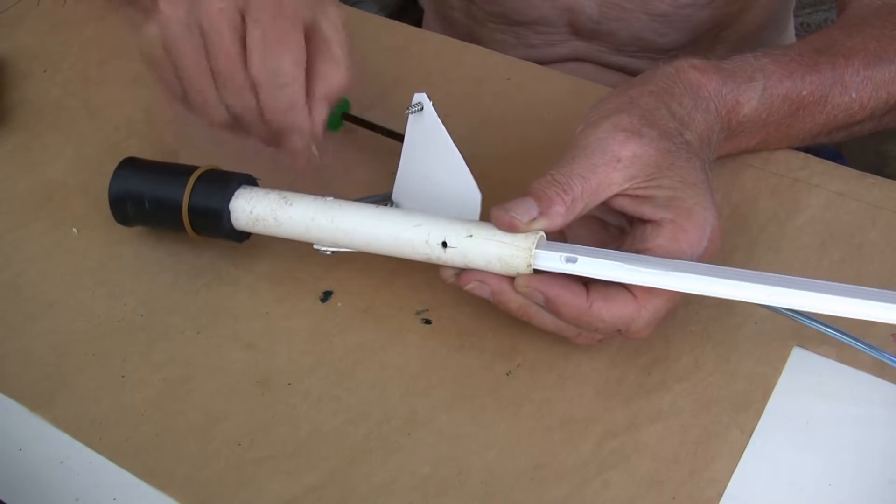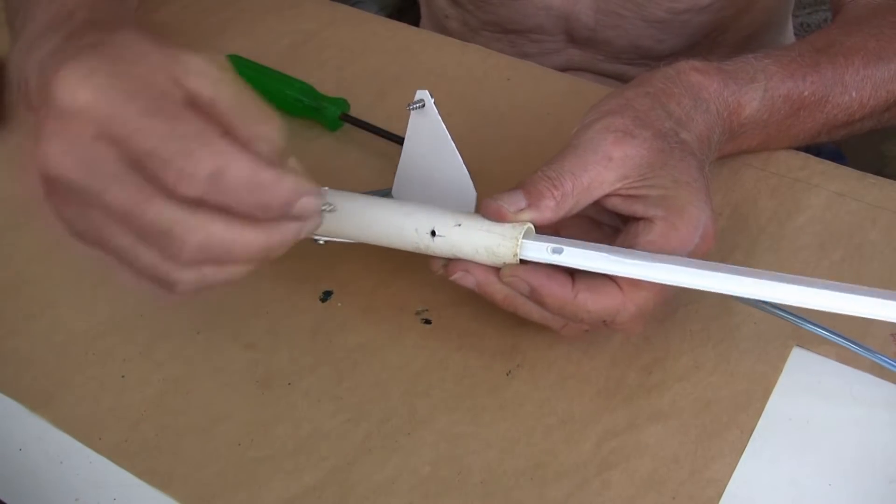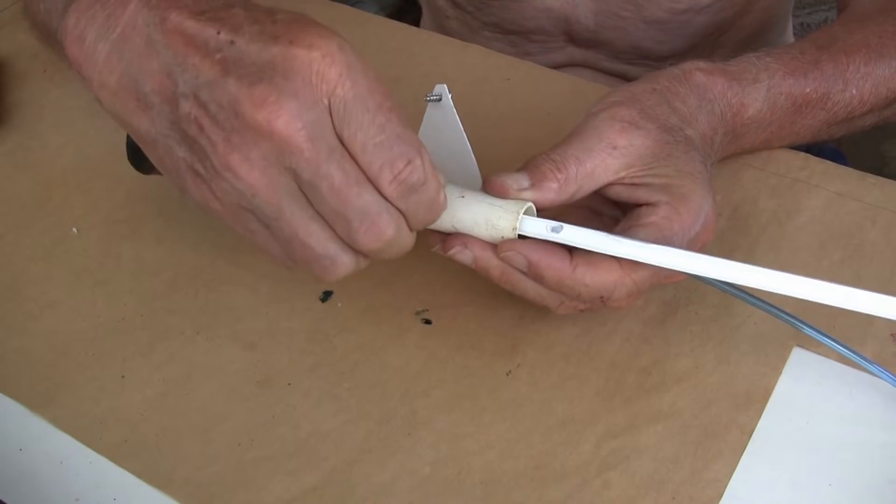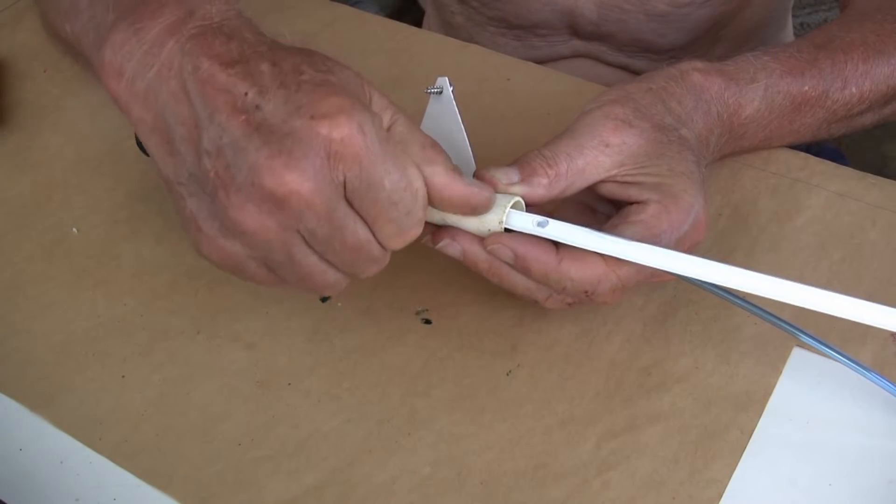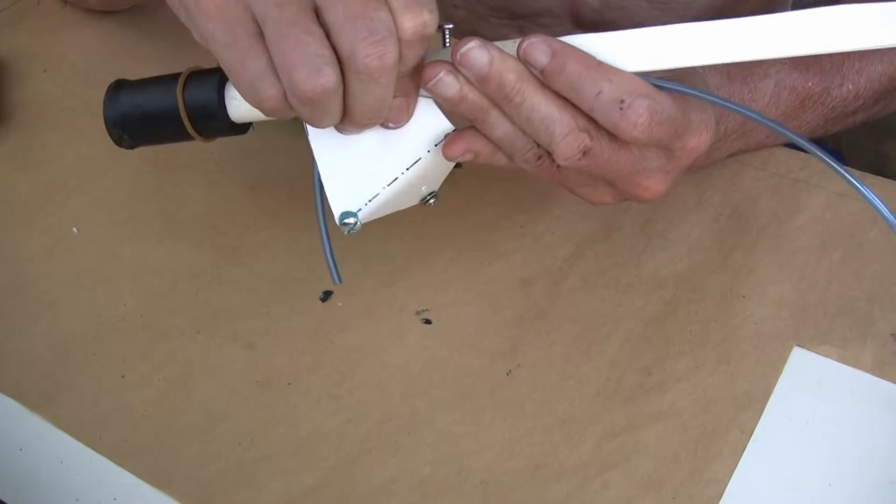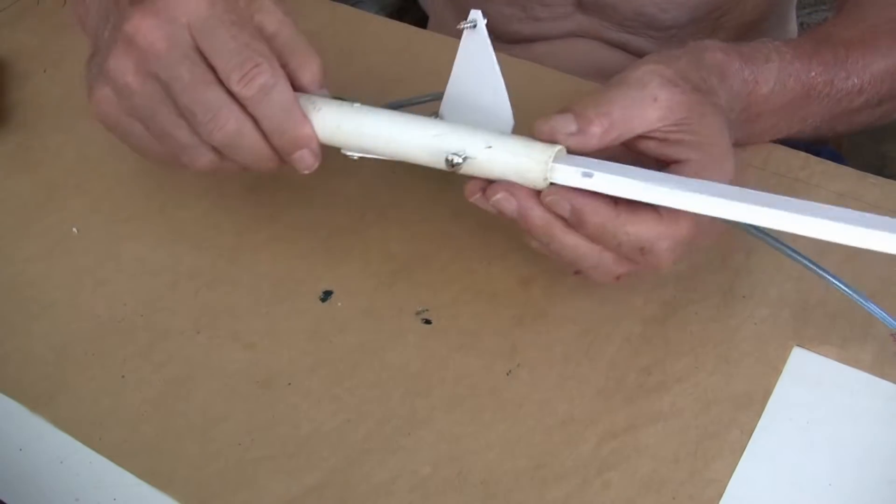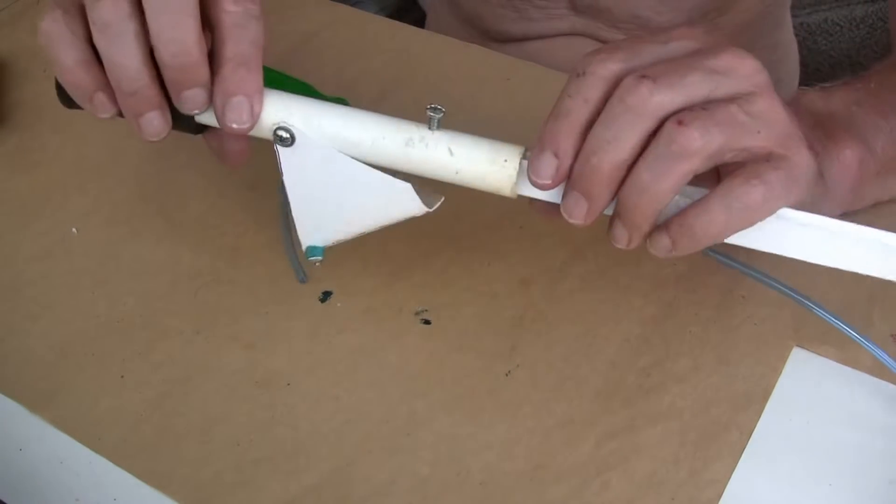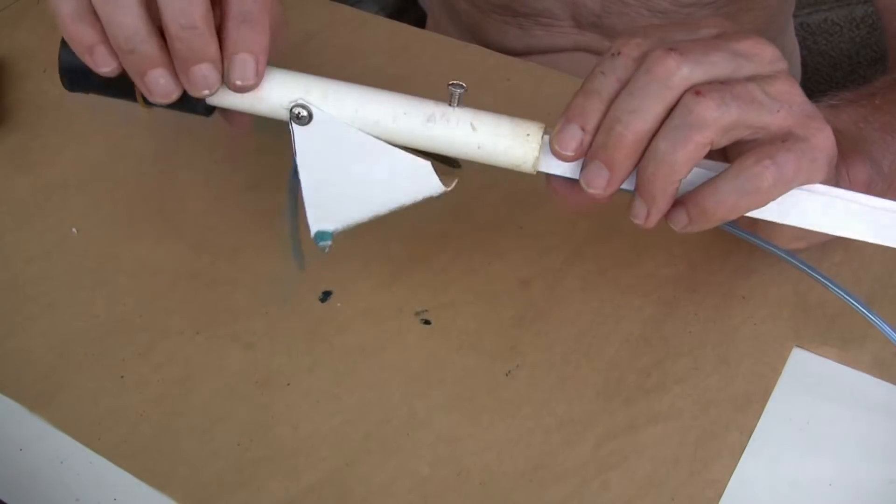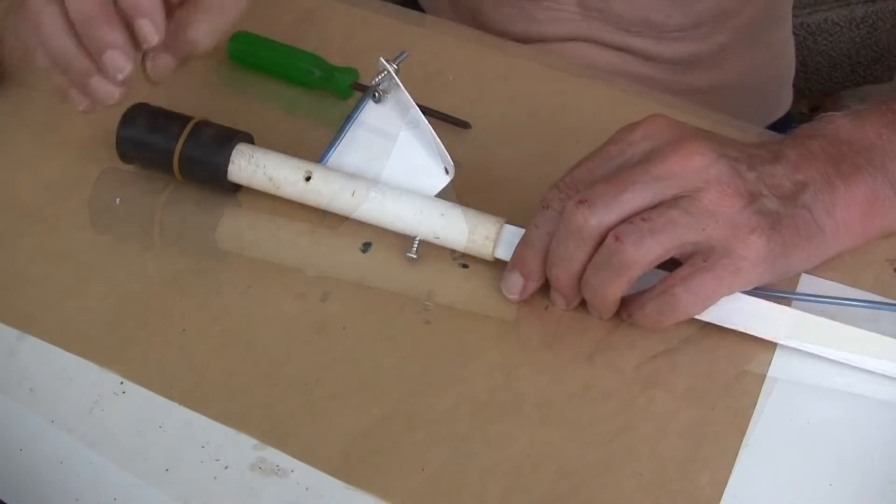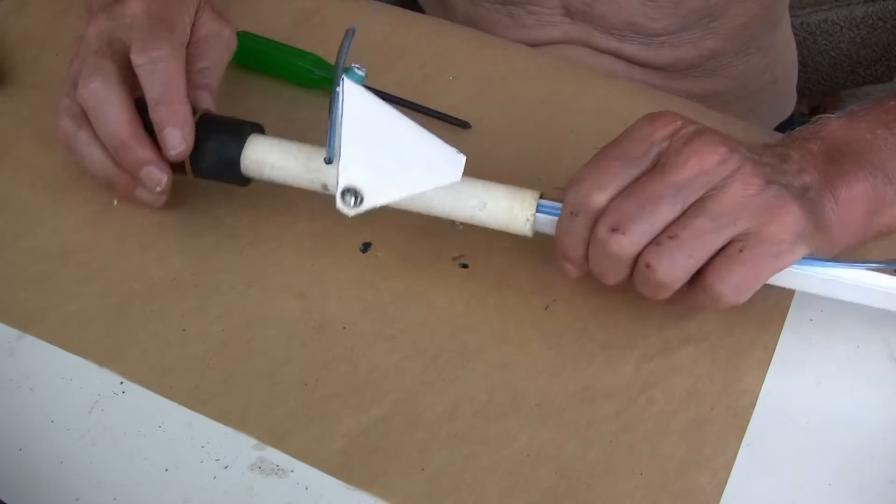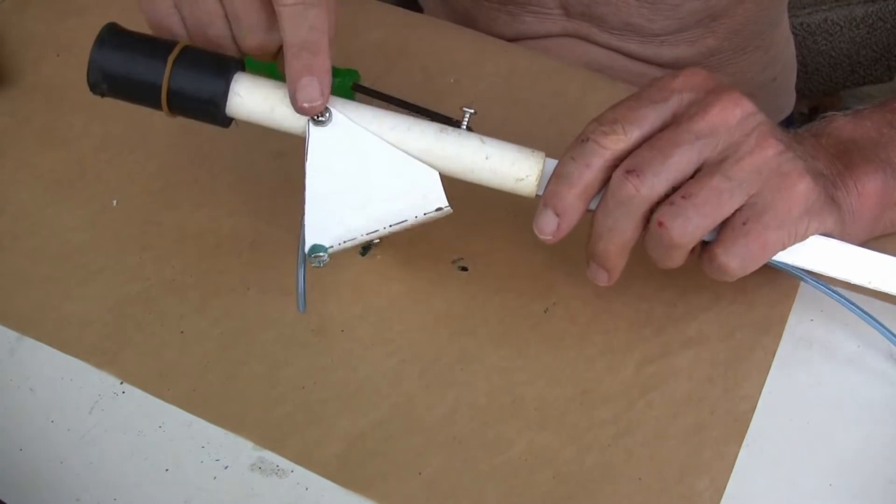This rubber band return spring connects to a screw on the bottom here. The core flute is pushed in until it contacts the pivot screw.